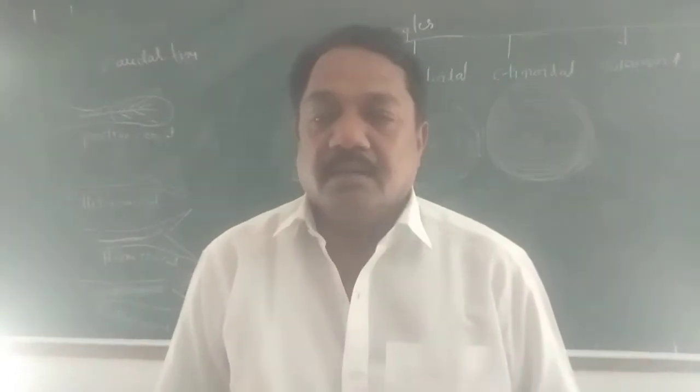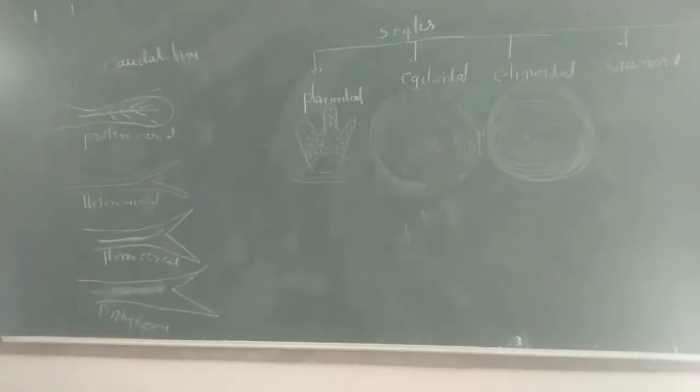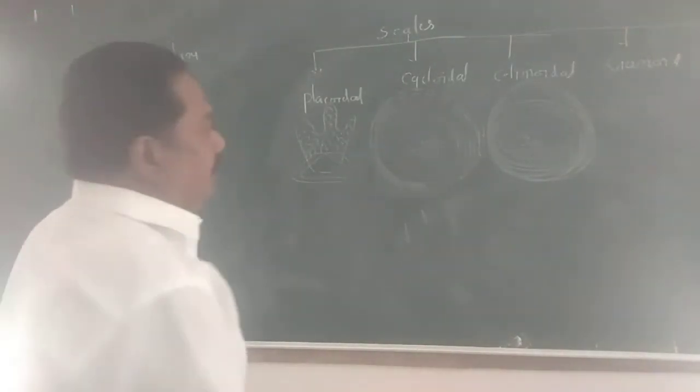Ganoid and cosmoid scales are present in extinct fishes. Now they are not existing in the animal kingdom. Like that, five different scales are present: placoid, cycloid, ctenoid, ganoid, and cosmoid.